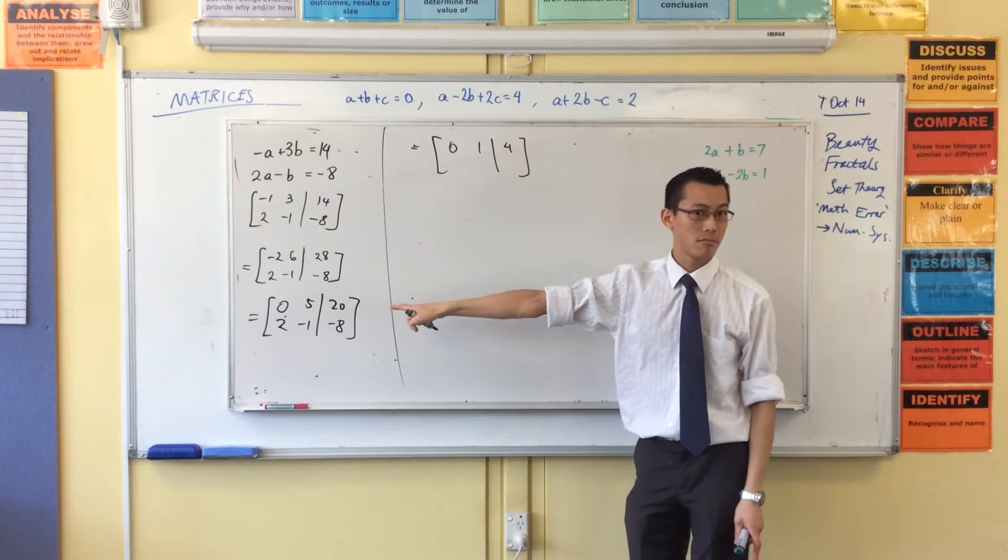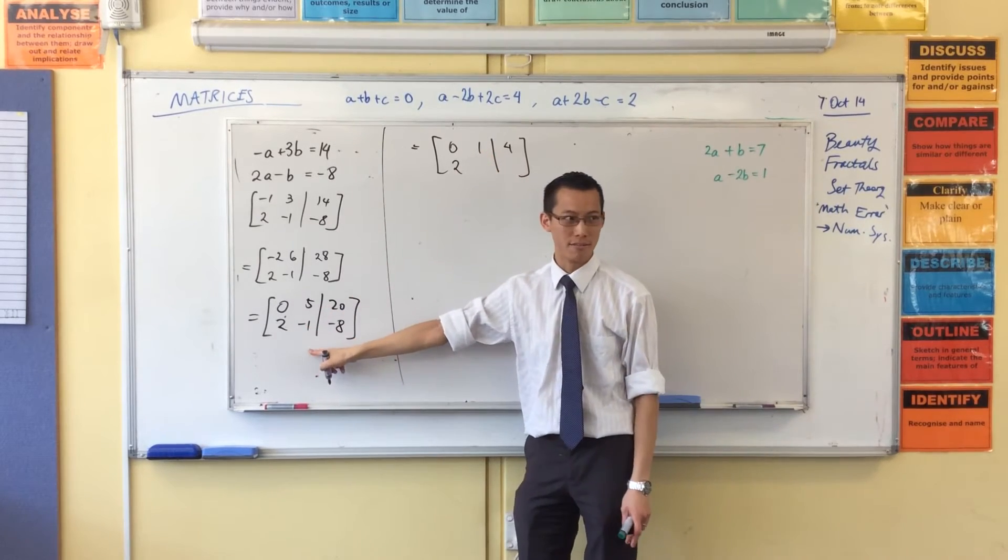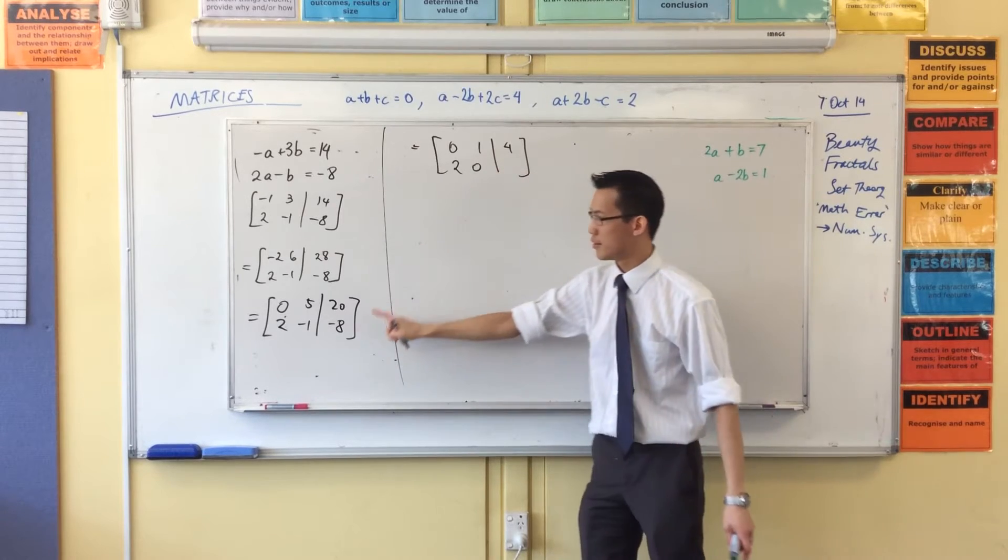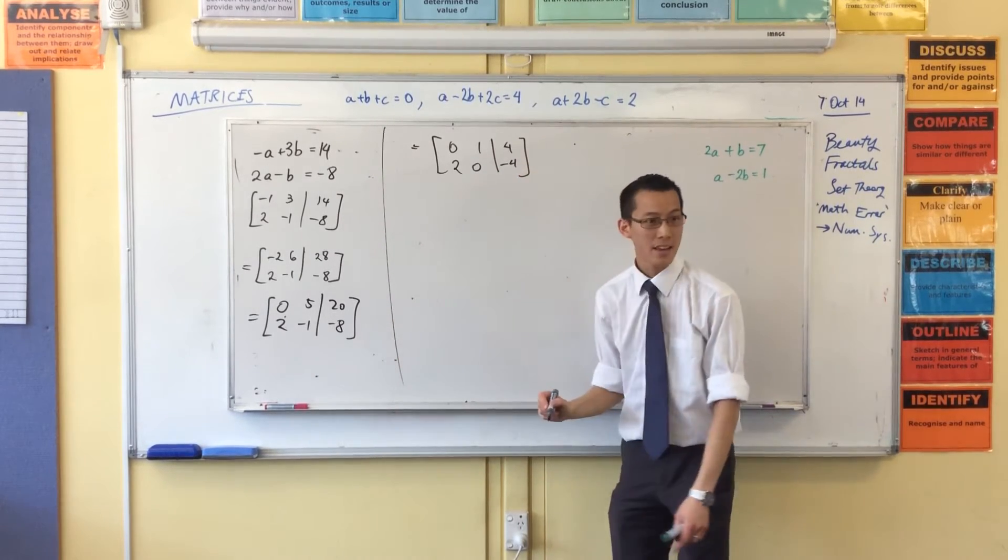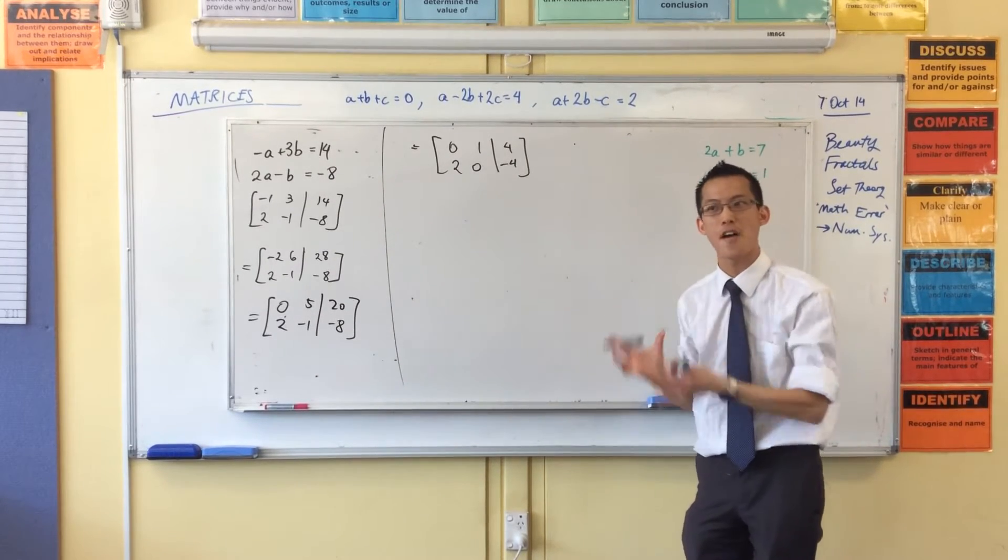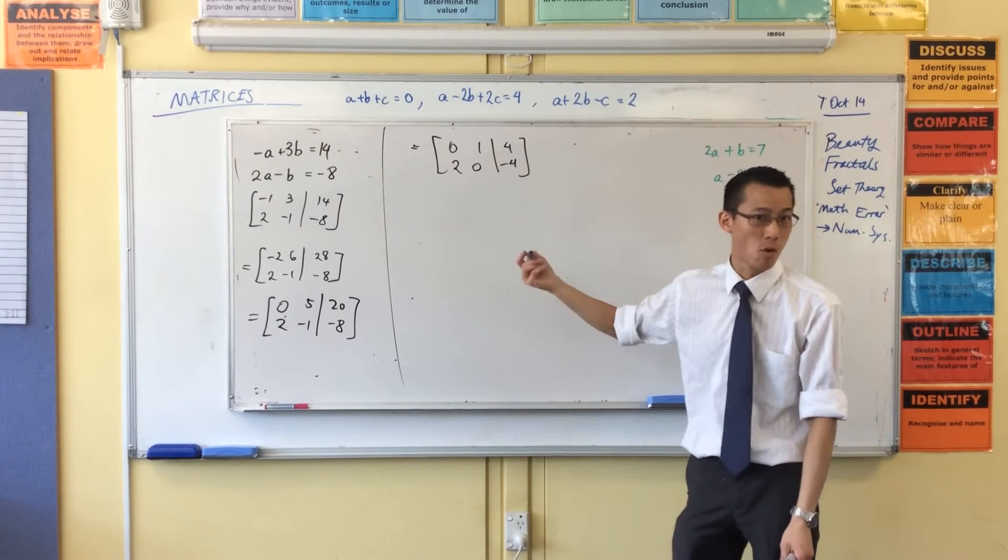Zero plus two. Two. One plus negative one. Zero, which is what I wanted. And then it's four plus negative eight, which is negative four. So you see, matrices are more powerful in that they let you do arithmetic faster. That's the payoff for having to write more. You can think more as well.